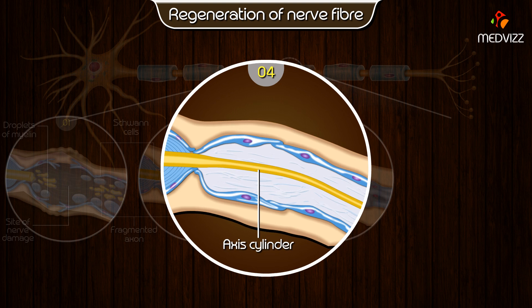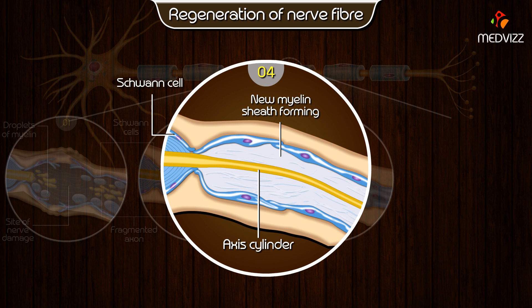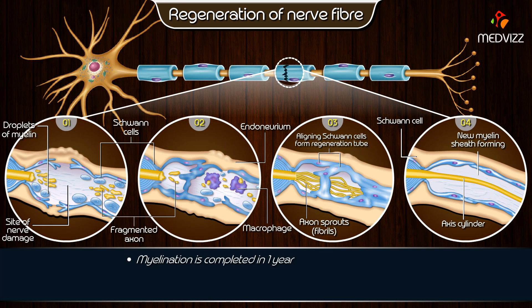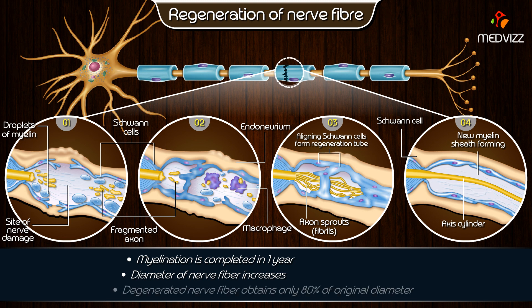The axis cylinder is fully established inside the neurolemma tube. These processes are completed in about three months after injury. The myelin sheath is then formed by Schwann cells slowly, and myelination is completed in one year.